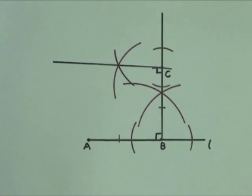Then construct a point D so that CD is equal in length to AB and BC.